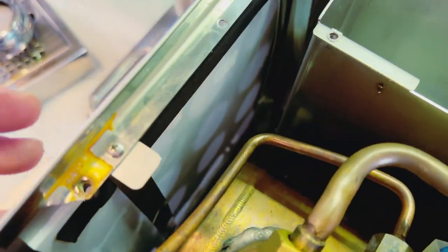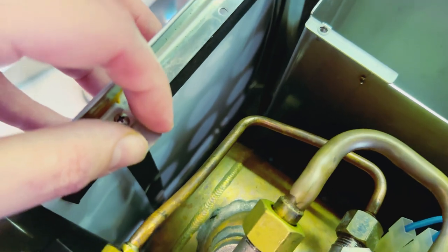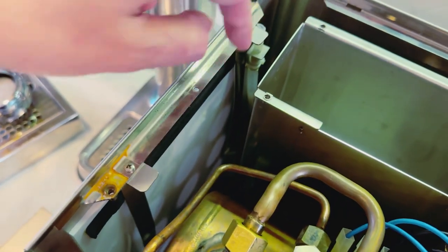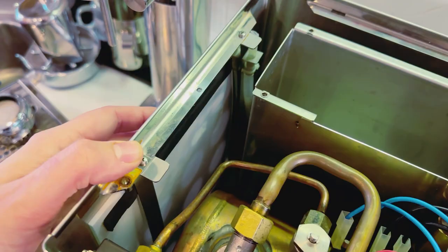Next, there's some screws here on the side holding the panel to the side of the machine. Just take those screws out. Don't drop the screws in there because it really sucks to have to get them out.